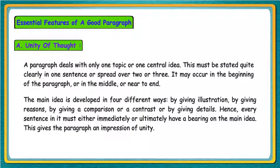The main idea is developed in four different ways: by giving illustration, by giving reasons, by giving a comparison or a contrast, or by giving details. Hence, every sentence in it must either immediately or ultimately have a bearing on the main idea. This gives the paragraph an impression of unity.